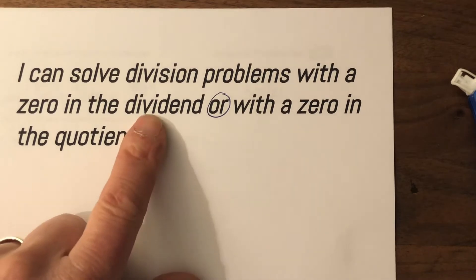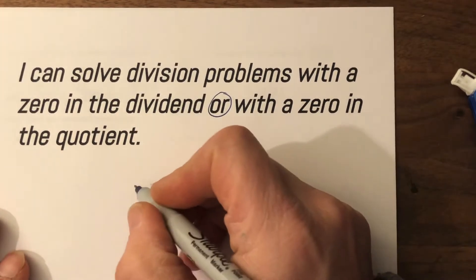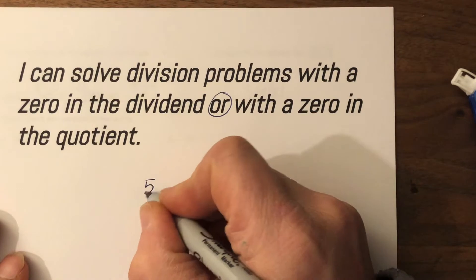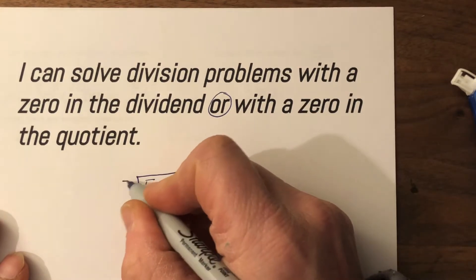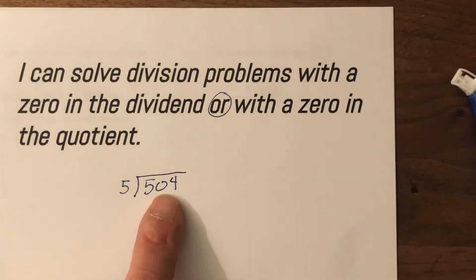So a zero in the dividend is the large number that we're dividing by. So it would be something like this, like if I said 504 divided by, let's say, 5, right? See that zero in there? We're going to learn how to go through that zero.